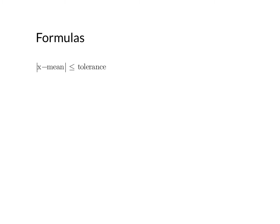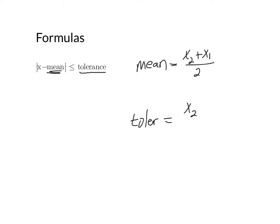The primary formula we're going to be using says the absolute value of x minus the mean is going to be less than or equal to when we're going in between, and then we note the tolerance. The mean is just the average of two data points: x2 plus x1 divided by 2. For tolerance, you take x2 minus x1 and divide by 2 — same formula, except one you're adding and the other you're subtracting.